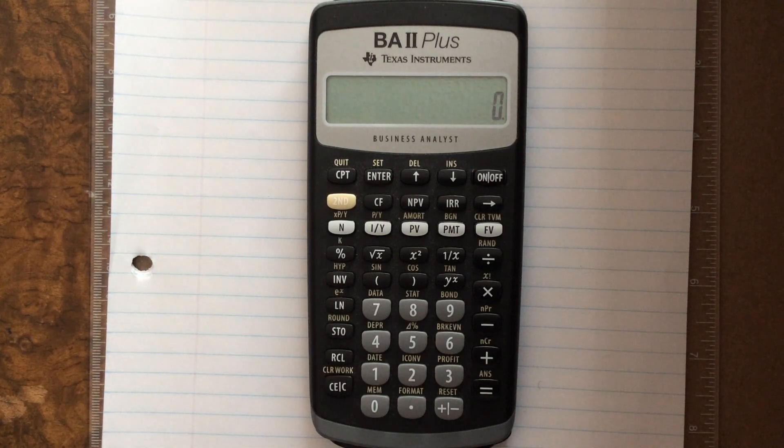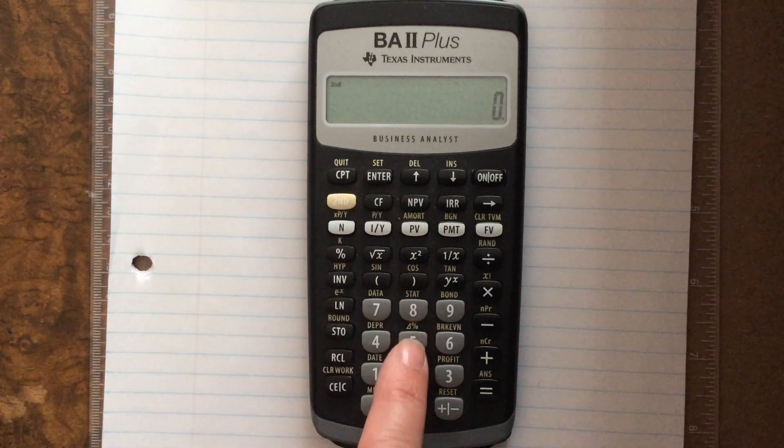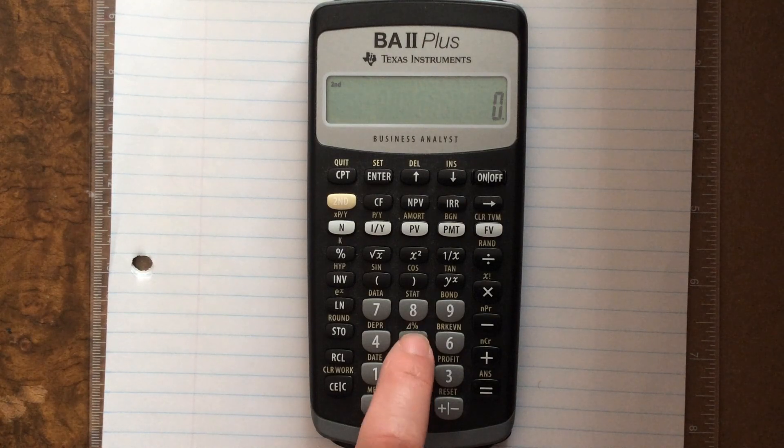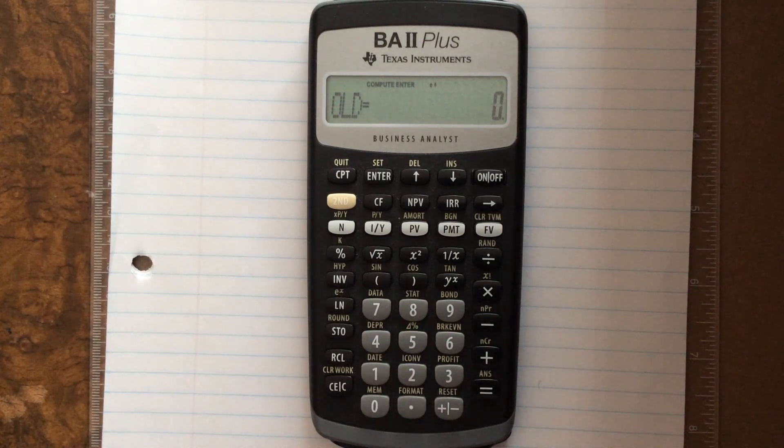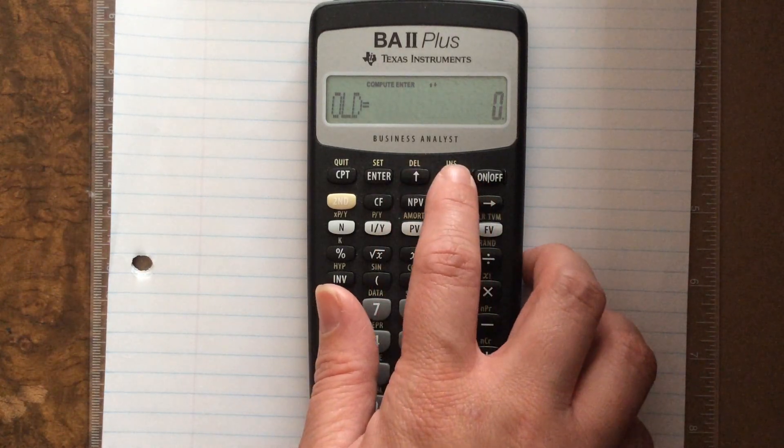In order to get to the percent change function, you're going to use this yellow second function button and then press 5, which has that little percent change above it. This is going to get you into percent change land, and you've got some variables here, so I can scroll between them using these up and down keys.